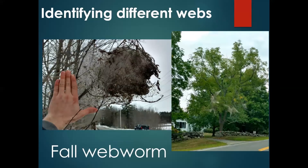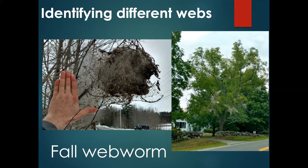On identifying webs — there are a few different web-making caterpillars in Maine. The first is fall webworm, which is native. It creates a very large web, sometimes in some of the same hosts as browntail, such as cherry and apple and other fruit trees, but also in walnut — which you'll never see browntail in. The web is about the size of a football if not larger, and these webs appear beginning in late summer.